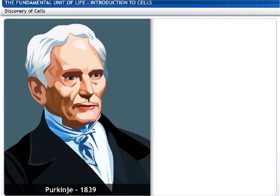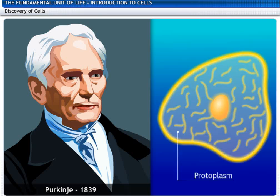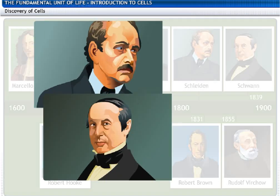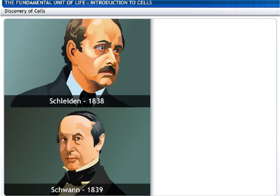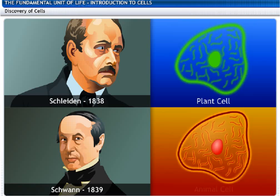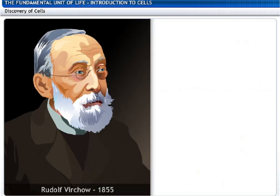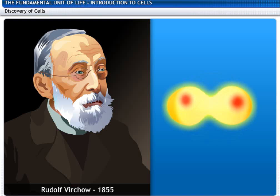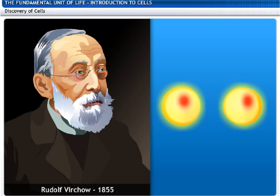Purkinje, in 1839, coined the term protoplasm for the fluid substance of the cell. Two biologists, Schleiden in 1838 and Schwann in 1839, proposed the cell theory that all plants and animals are composed of cells. Rudolf Virchow, in 1855, further expanded the cell theory by saying omnis cellulae cellula, which means all cells arise from pre-existing cells.